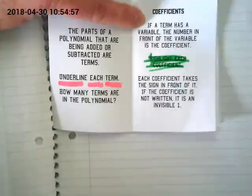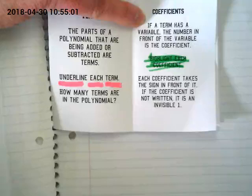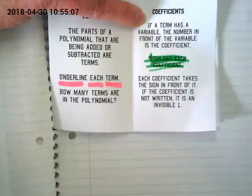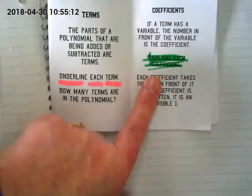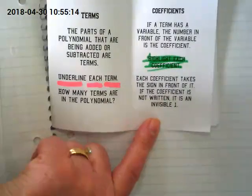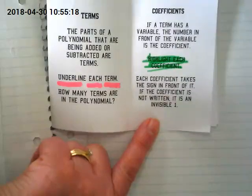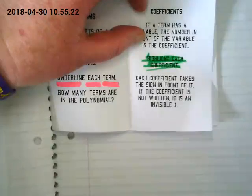Coefficients. If a term has a variable, the number in front of the variable is the coefficient. If the term has a variable and there's no number in front of it, its coefficient is an invisible one. You will be highlighting each coefficient. Each coefficient takes the sign in front of it. If the coefficient is not written, it's an invisible one. And if there's nothing in front of it, it's also positive.